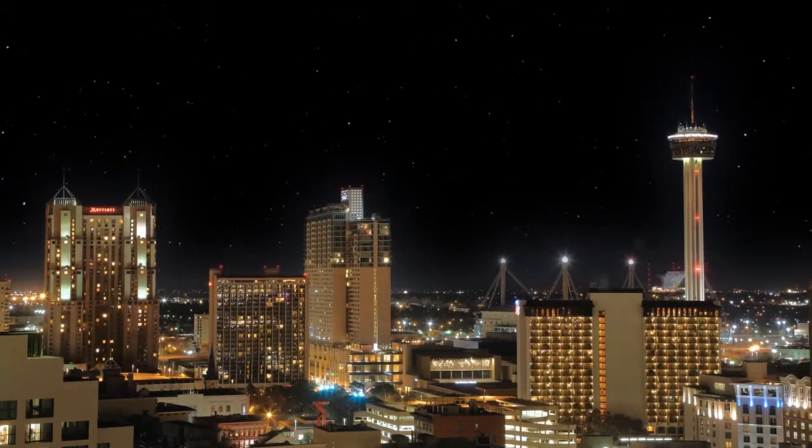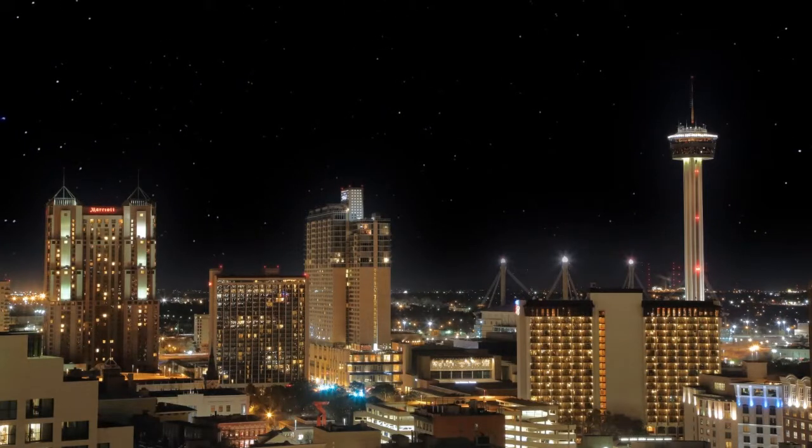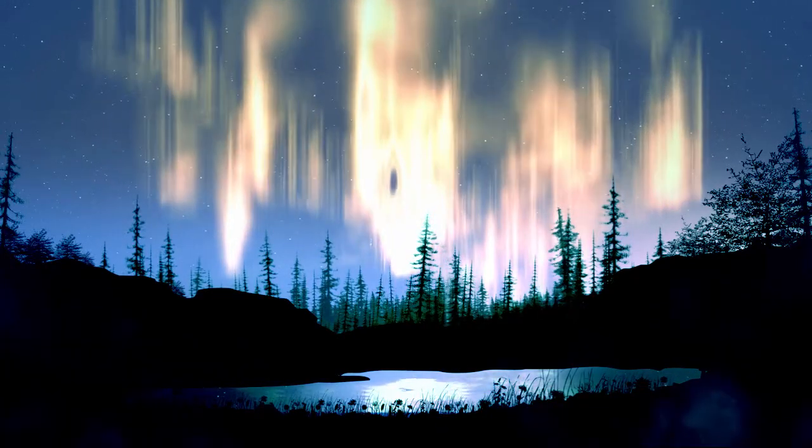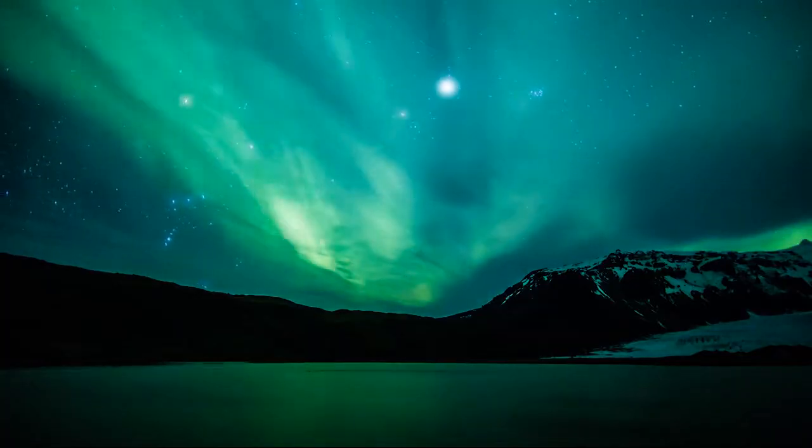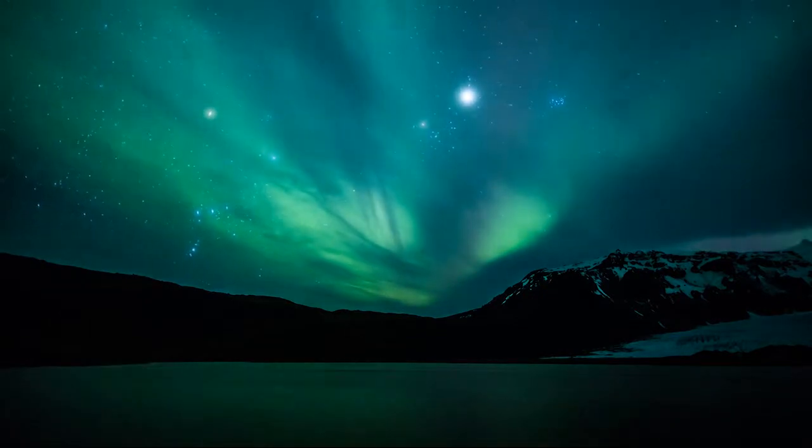When you look up at the night sky in San Antonio, you see the moon and the stars and maybe an occasional meteor streaking by. But in the polar regions of the Earth, you often see something else. Sometimes the sky is filled with shimmering panels of colorful light, known as the Northern Lights or Aurora.